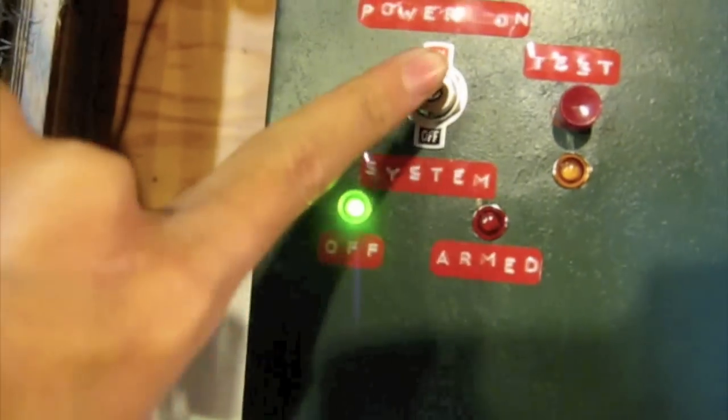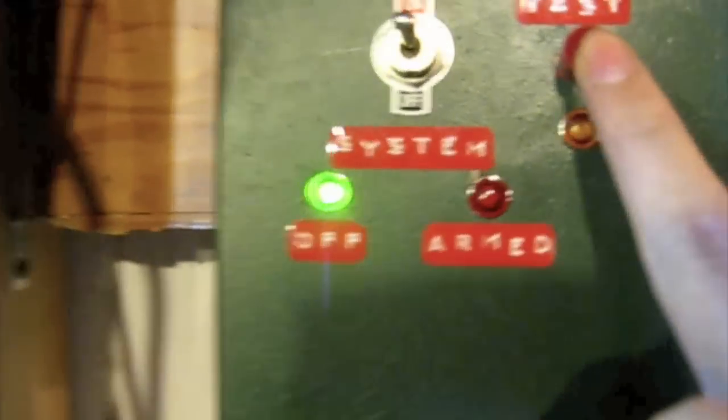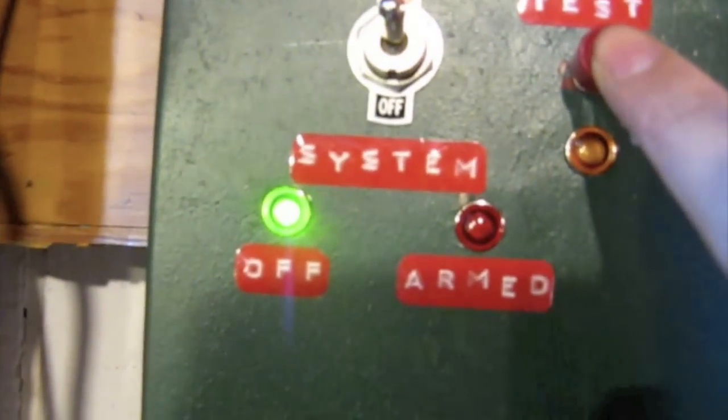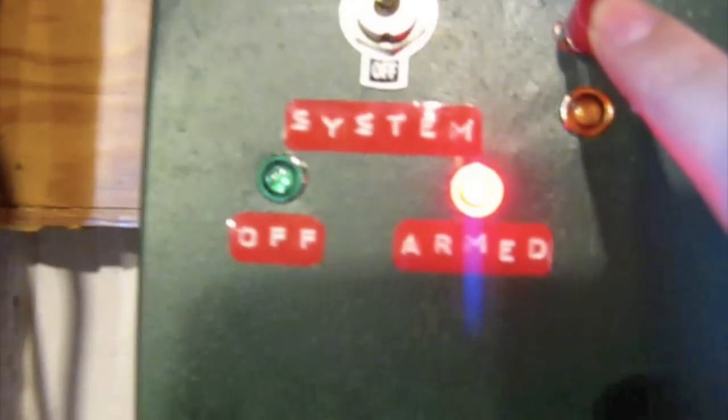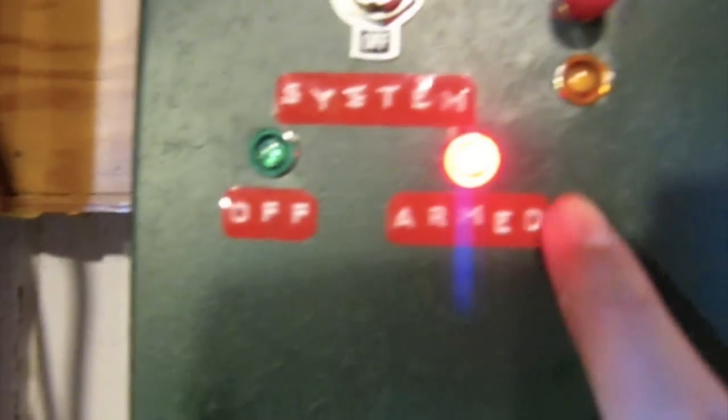And now I'll turn the power on. Nothing will happen. When I press test, things will happen if I hear clicking noises. There you go. That's the solenoid pushing down. So it switches from off to armed.